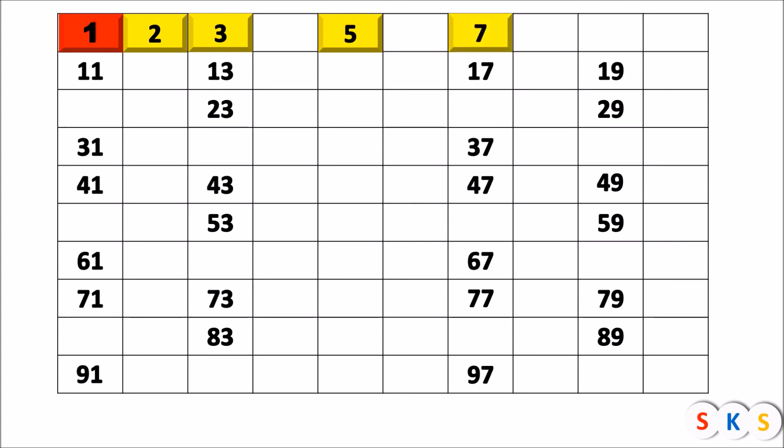Now here we have the next number 7, and 7 is a prime number because it has exactly two factors, that is 1 and 7. Now we are going to remove all multiples of 7 from this table because numbers that are multiples of 7 will have more than 2 factors. For example, 49 — you can see 49 in this table — has factors 1, 7 and 49. So 49 is not a prime. We will remove all numbers which are multiples of 7.